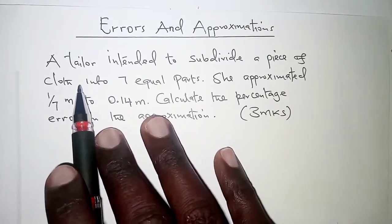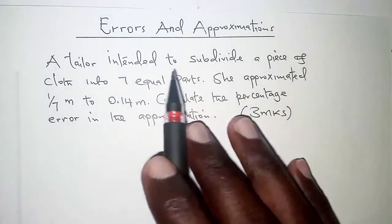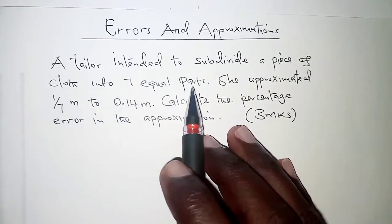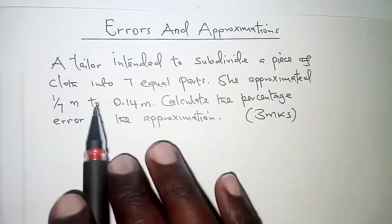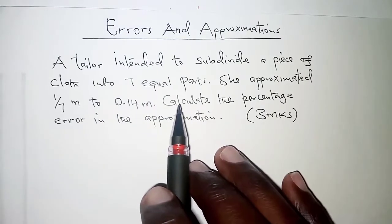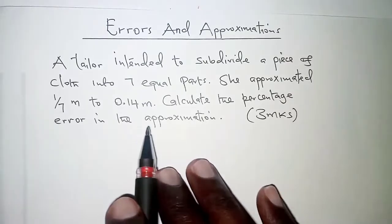The question reads: a tailor intended to subdivide a piece of cloth into 7 equal parts. She approximated 1 over 7 meters to 0.14 meters. Calculate the percentage error in the approximation.